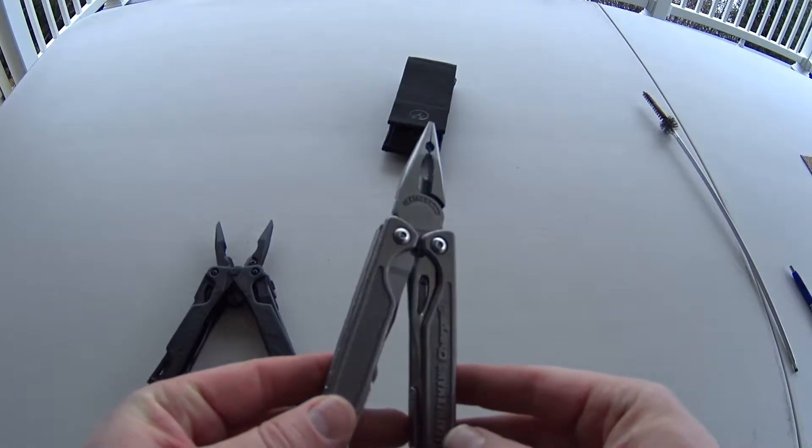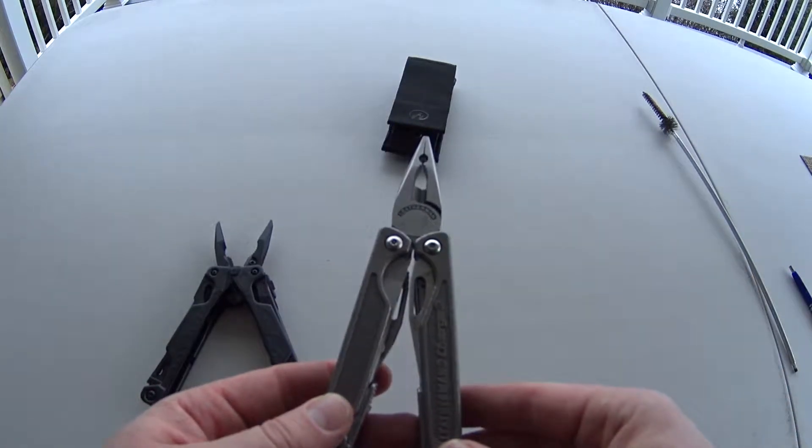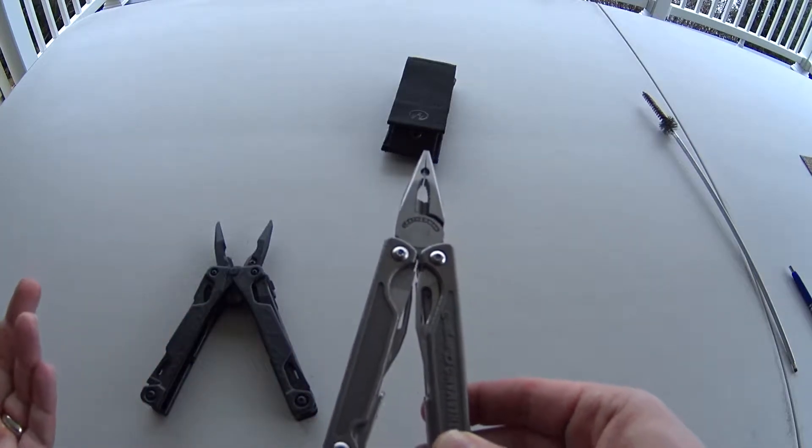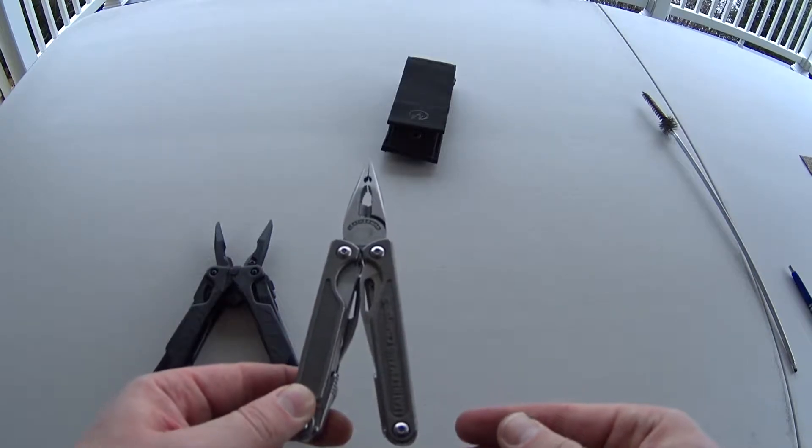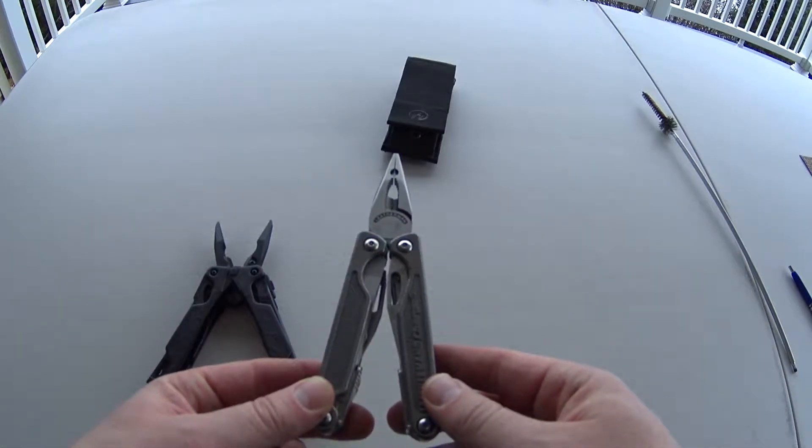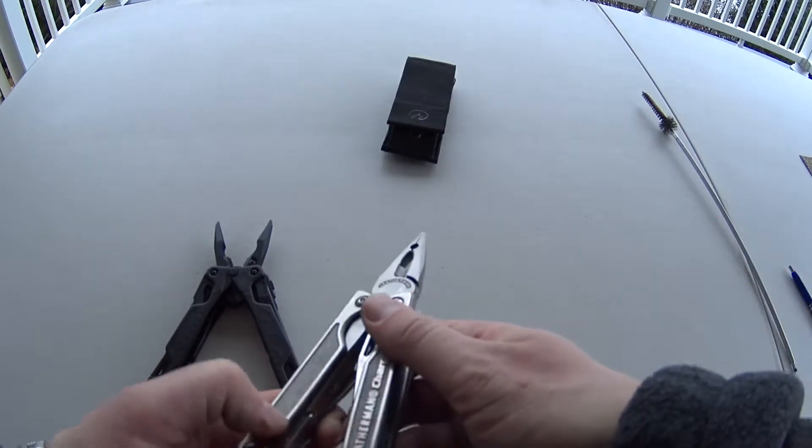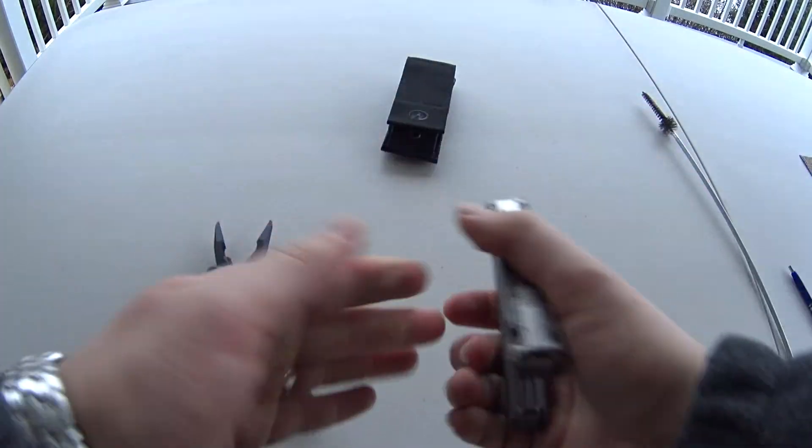Whereas I find myself using the Charge a lot less, and usually I'll carry a pocket knife on me as well in addition to this. So I found when I would carry the Charge, I would always grab for the pocket knife just because it was easier to flick open one-handed. So it is an appreciated feature with the OHT.